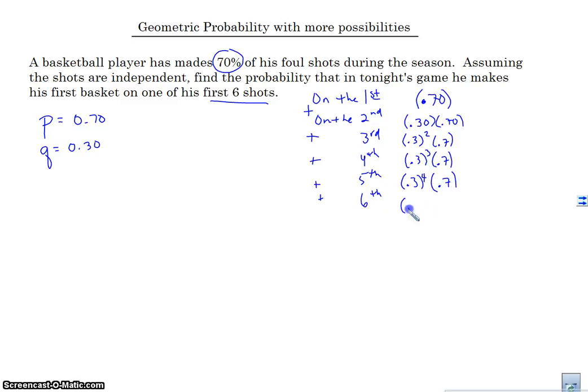On the fifth shot would mean that he misses the first four shots and makes it on the fifth one. And then finally, he misses the first five shots but makes it on the sixth one. So what we're going to do is we're going to add all of these probabilities up together. And that should give us the total probability that he will make his first basket on one of the first six shots.